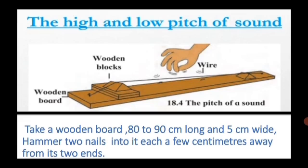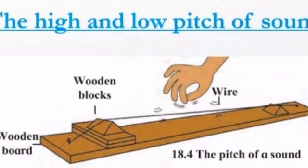Insert a wedge-shaped wooden or stick block under the wire near each of the nails and pluck the wire lightly. Did you hear any sound? Observe whether the wire vibrates. Now insert two or three small rectangular blocks below the wedge-shaped block on one side.